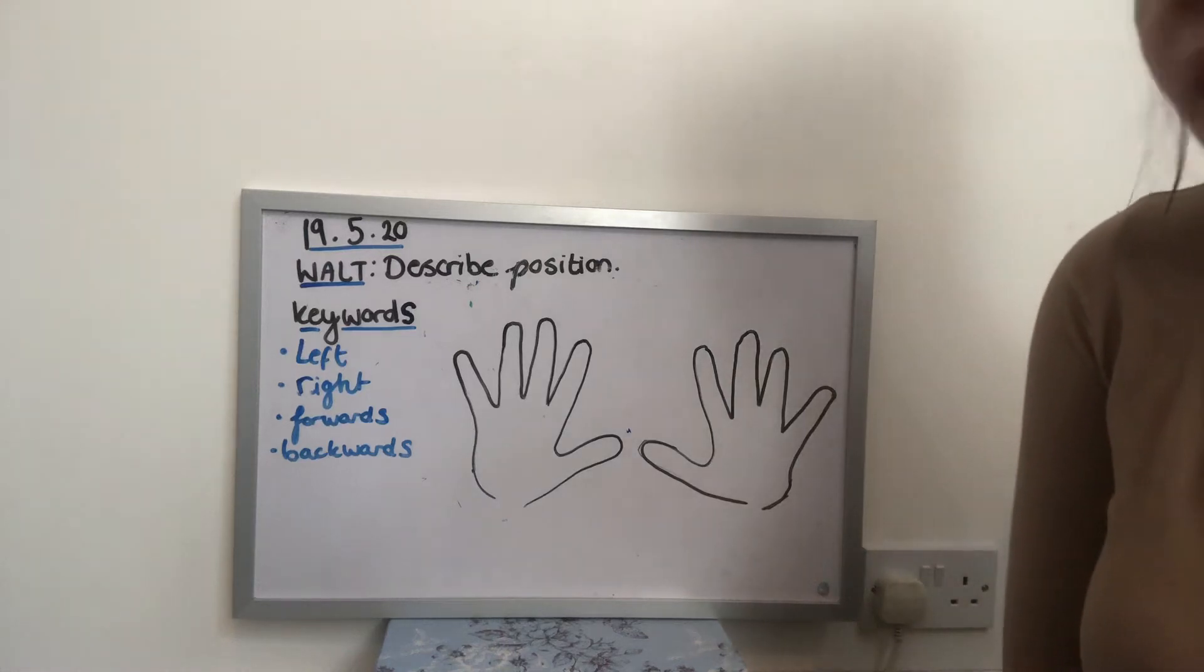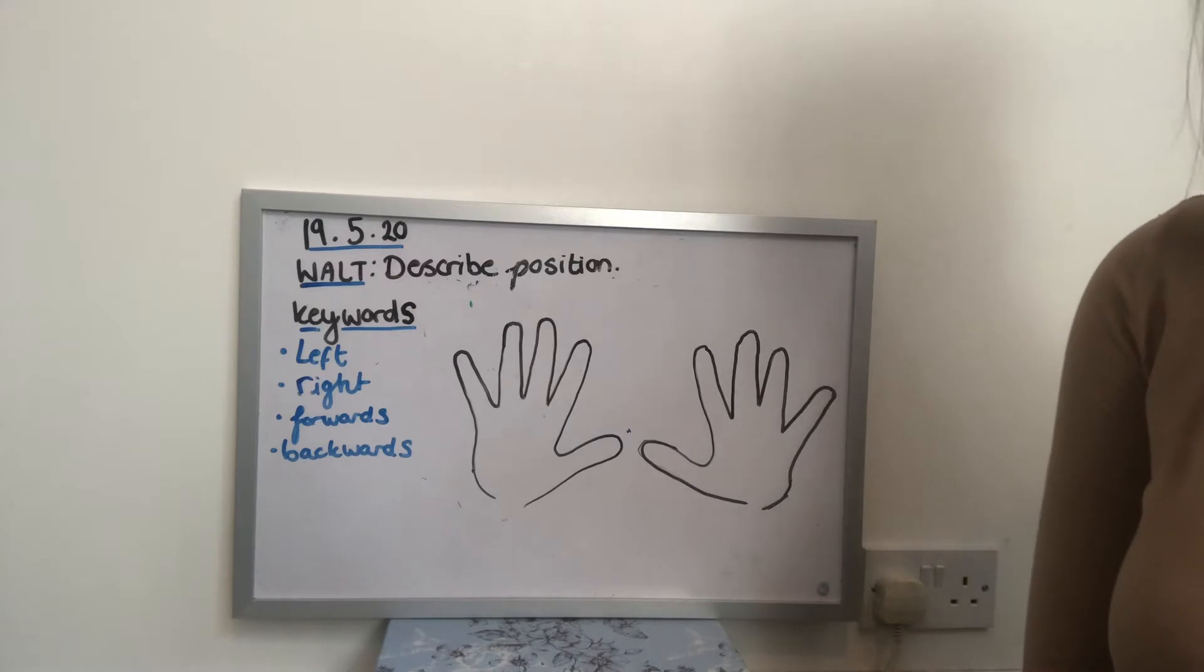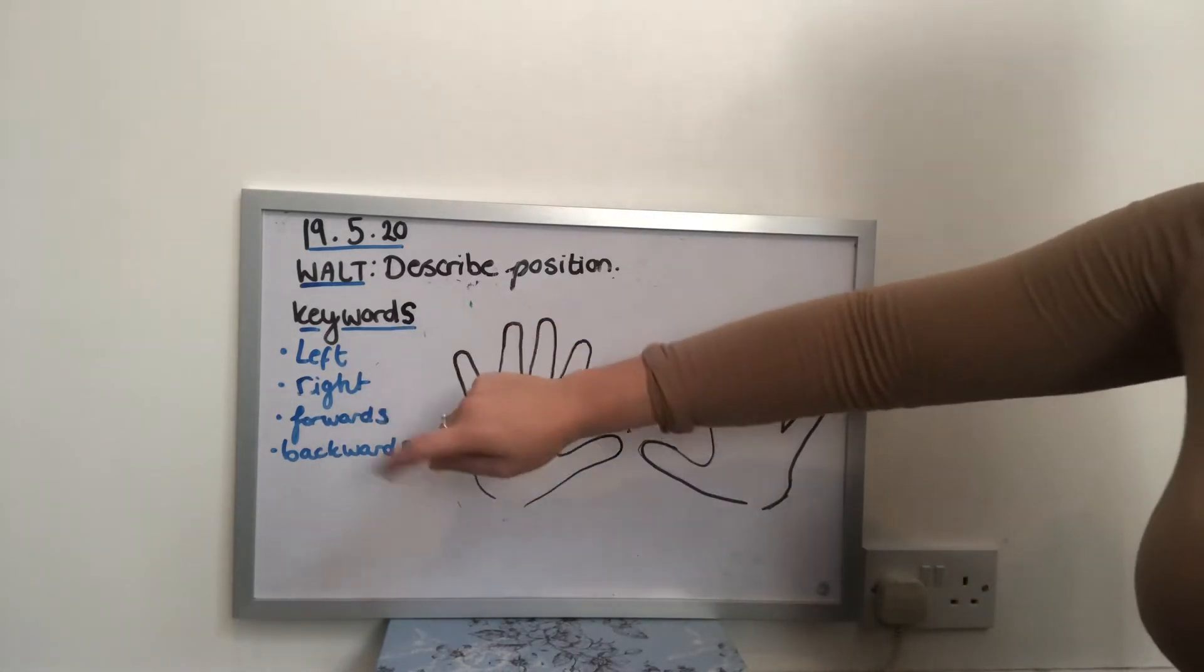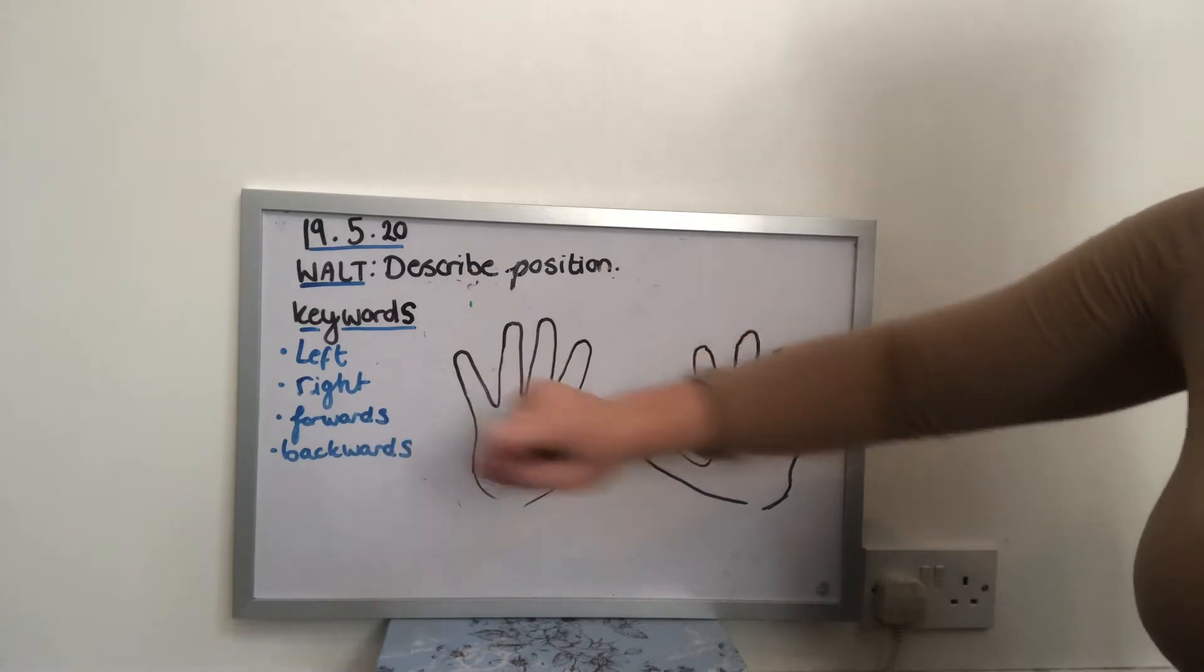Hello Year One. Today in maths we are learning to describe position and the key words we need to think about today are left, right, forwards and backwards.